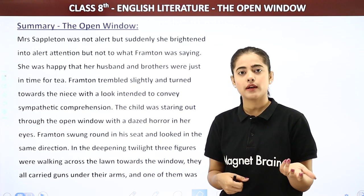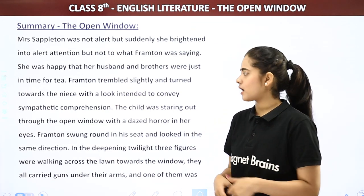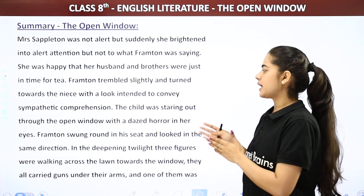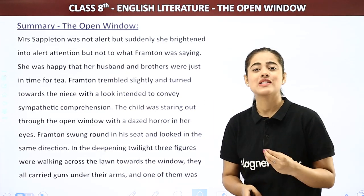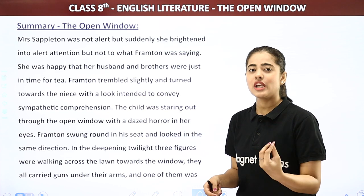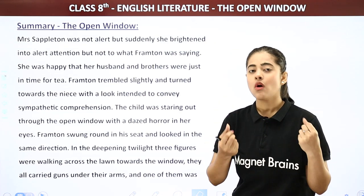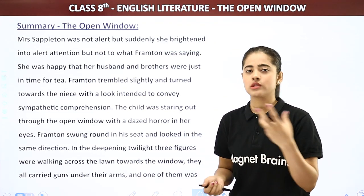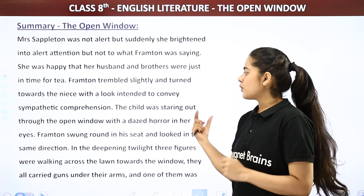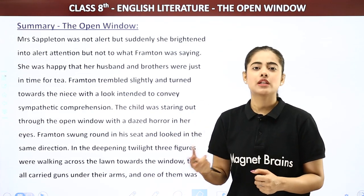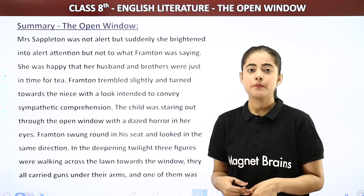Frampton looked at Vera with a look intended to convey sympathetic comprehension — kind of sympathizing with this condition, thinking what a huge shock Mrs. Sappleton had suffered, believing they were returning. The child was staring out through the open window with a dazed horror in her eyes. This girl was also looking outside the window as if there was fear in her eyes. There are two reasons for this — the most probable being that she was scared that Frampton would now find out the story was false, or secondly she was doing it intentionally to make Frampton believe the story was real.